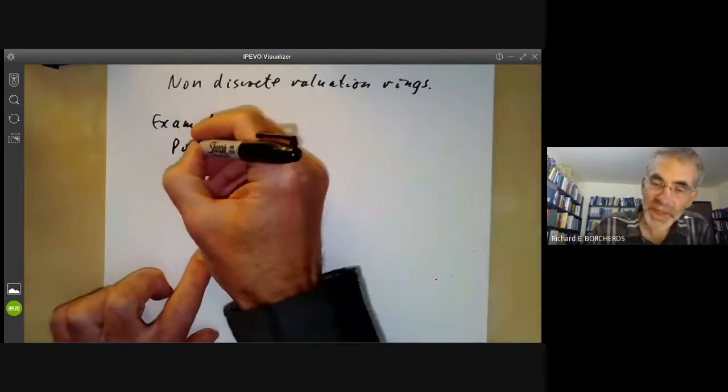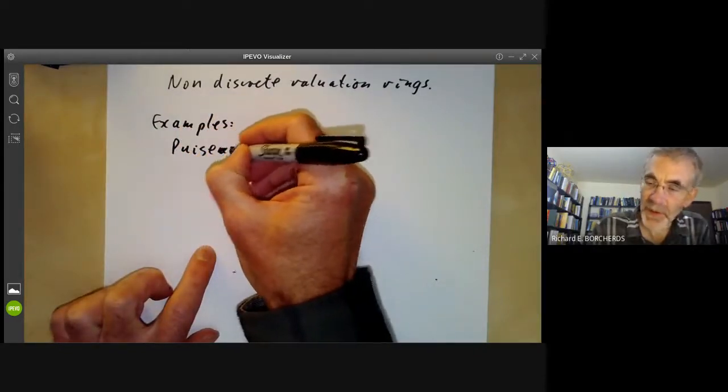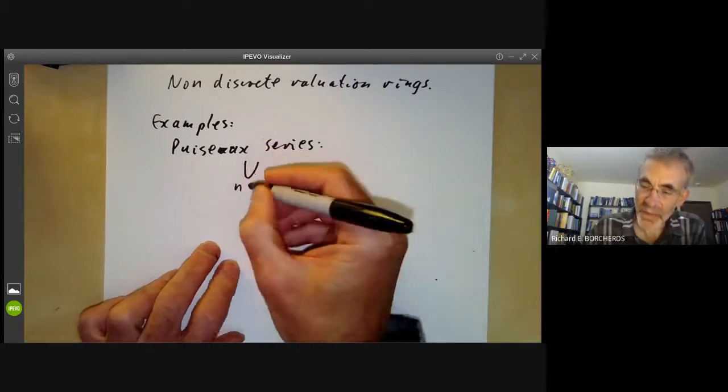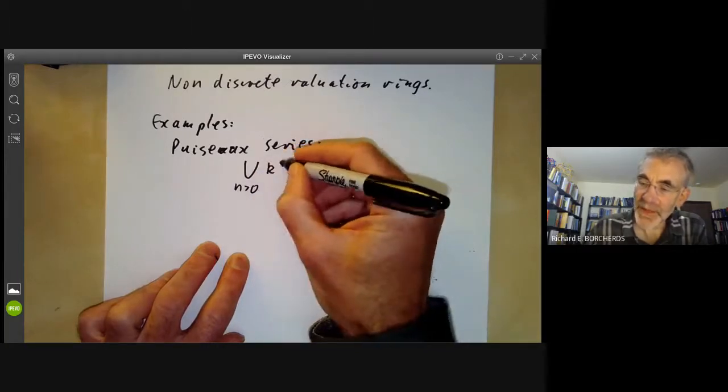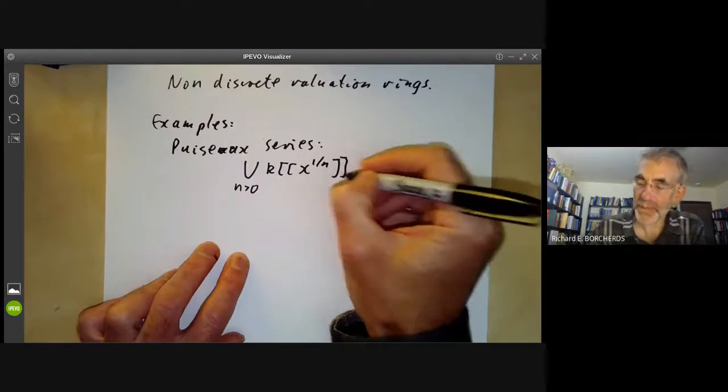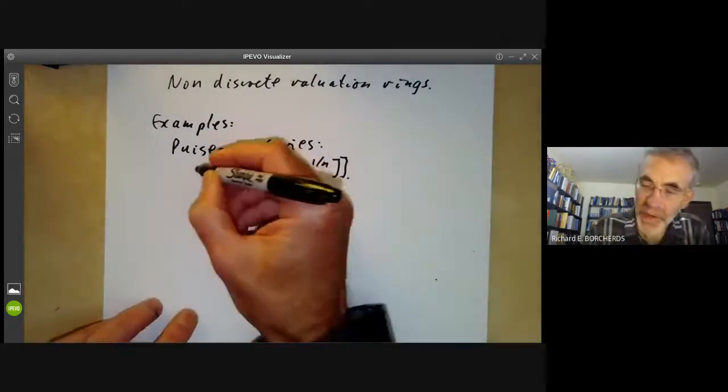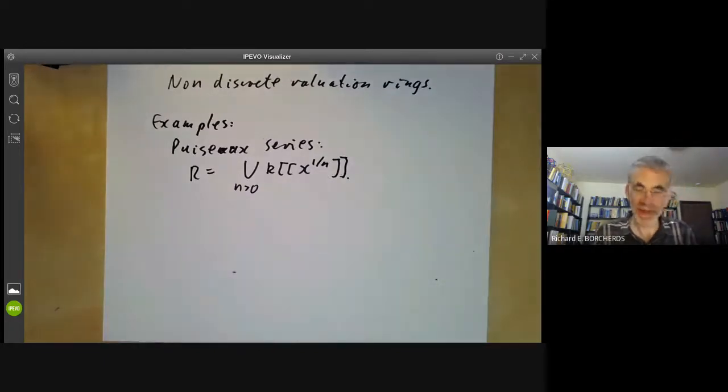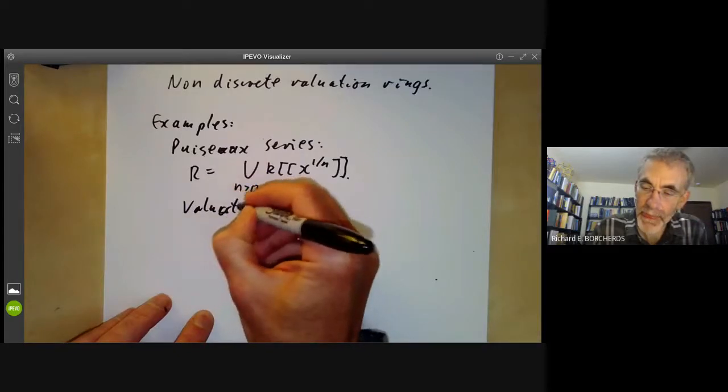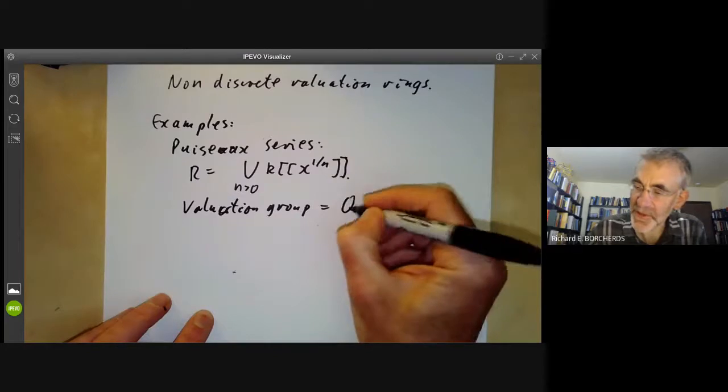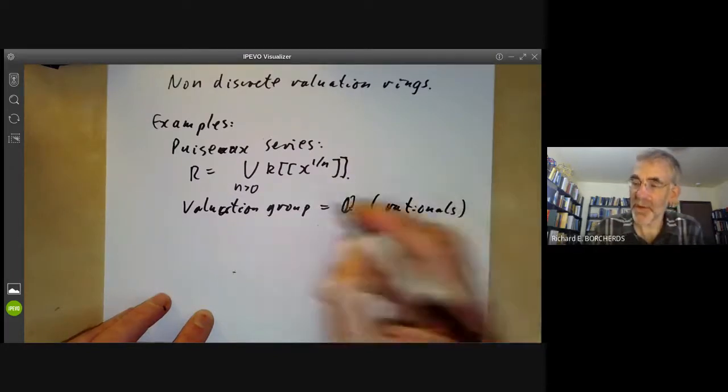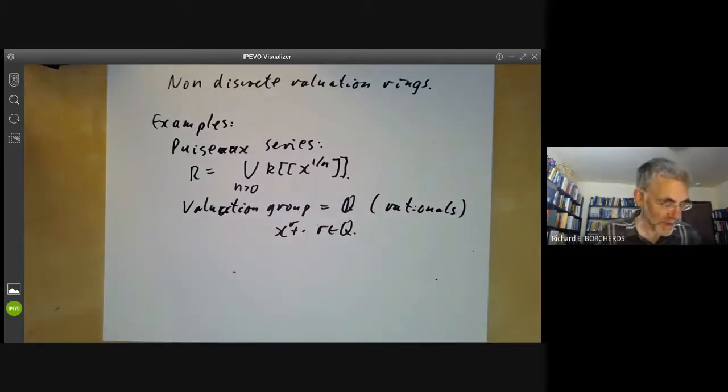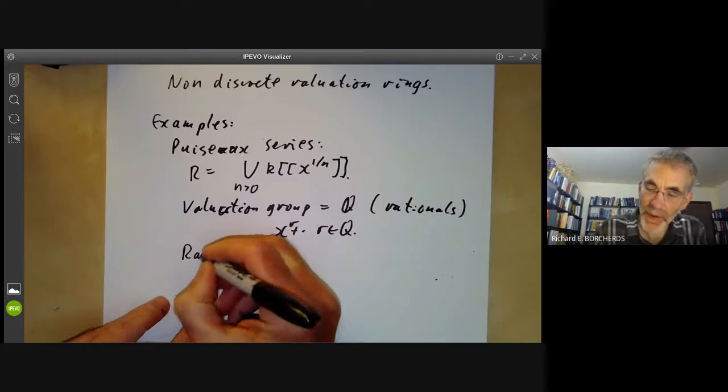Let's see some examples of them. The first example, Puiseux series. So this, the Puiseux series is the union over N greater than zero of the formal power series in X to the one over N. And you can see this is a valuation ring, and its quotient field is where you allow negative powers of X as well.